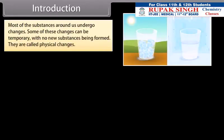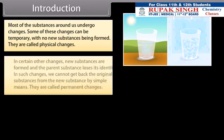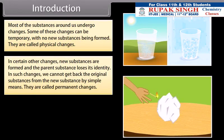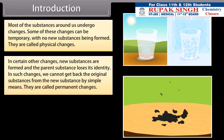Introduction: Most of the substances around us undergo changes. Some of these changes can be temporary with no new substances being formed. They are called physical changes. In certain other changes, new substances are formed and the parent substance loses its identity. In such changes, we cannot get back the original substance from the new substance by simple means. They are called permanent changes.